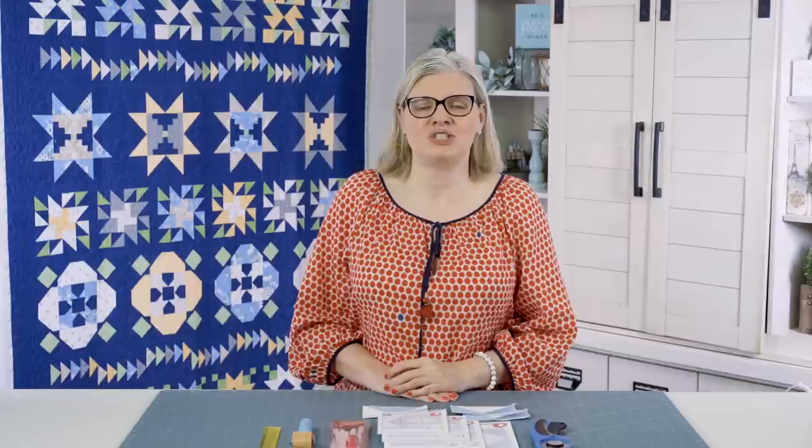The best part about it is your units are going to come out perfect, and so when you sew them into your block, your quarter inch is going to be perfect and right on the line, and it's going to make your blocks come together much nicer. I'm going to show you how to put those together.